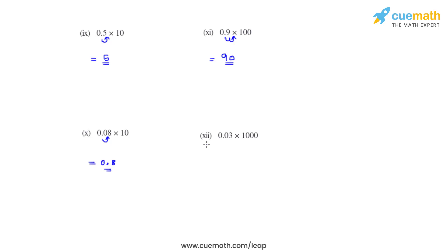Similarly, solving the 12th bit, which is the last bit of this question, we have 0.03 multiplied with 1000. As there are three zeros, we will be moving the decimal three places towards the right. There is no digit after 3, so that can be filled with a 0, and the product that we get is 30.